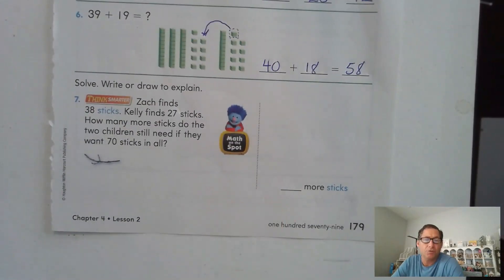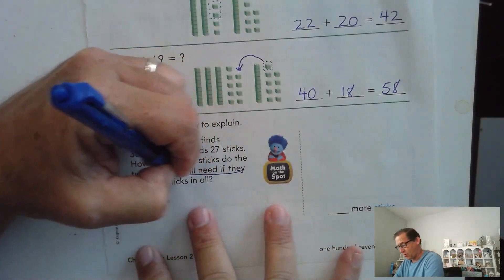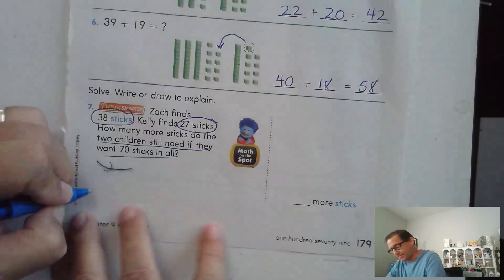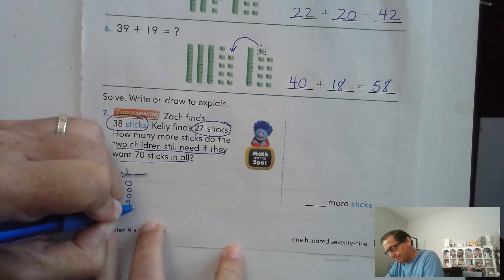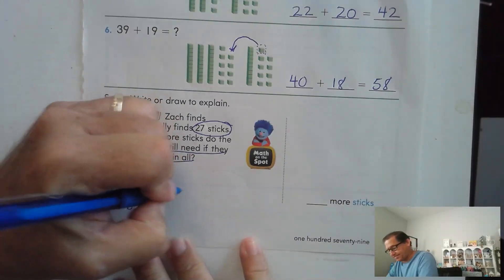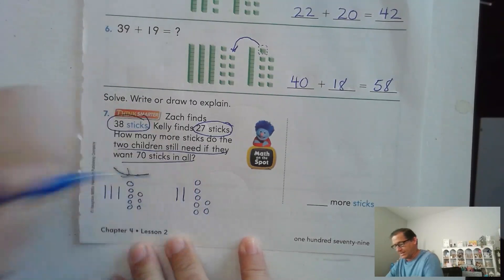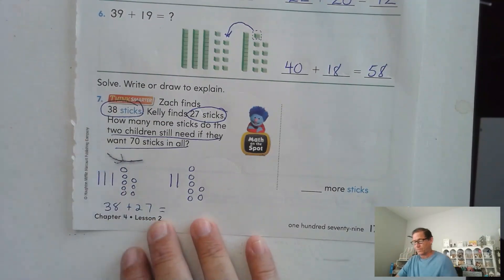Alright, write or draw to explain. Zach finds 38 sticks. Kelly finds 27 sticks. How many more sticks do the two children still need if they want 70 sticks in all? So we have 38 and we have 27. So the two of them, let's go ahead and write out a picture. 38 and 27.